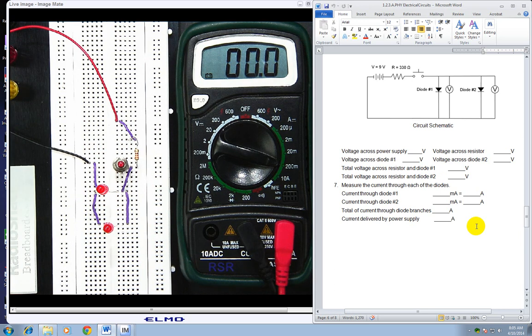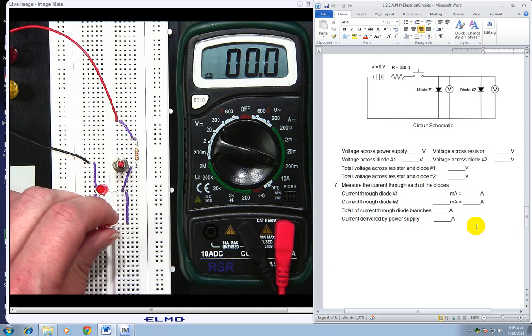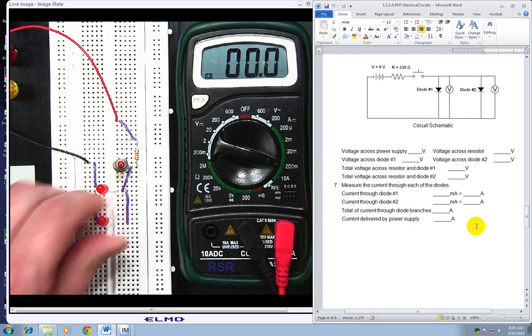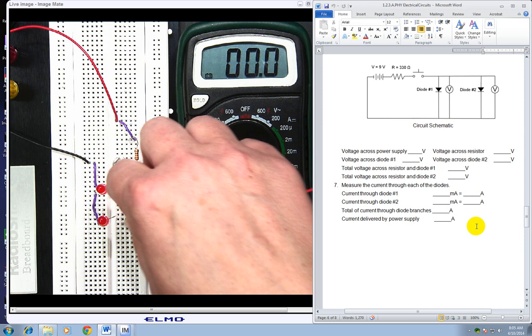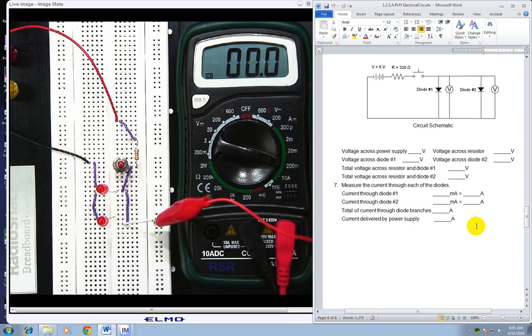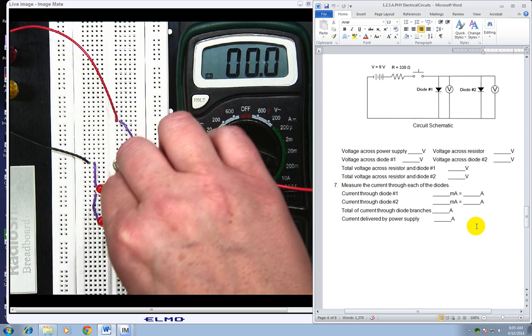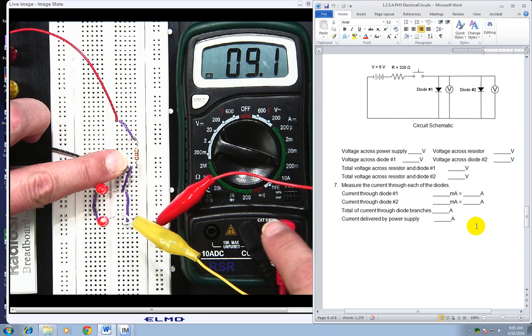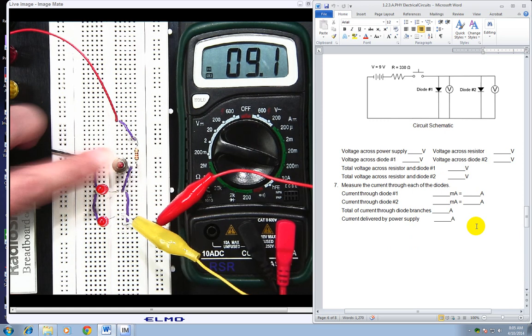So now I'm going to do diode two. So here is current through diode two. Again, I'll just do the same thing. Pick either side. It doesn't matter. Red one going in. Black one going to the next one. Push my button. And it's 9.1. Okay.